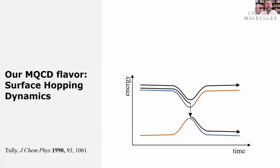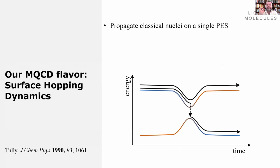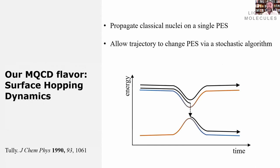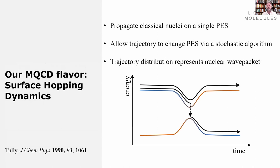Our favorite flavor of mixed quantum-classical dynamics is surface hopping — very well-known surface hopping — where you propagate the classical nuclei on a single potential energy surface, and allow the trajectory to change the surface via a stochastic algorithm, which means that you have to compute the transition probability between electronic states every time step. You compute a full trajectory, and the ensemble of trajectories represents the nuclear wave packet.